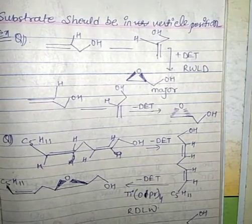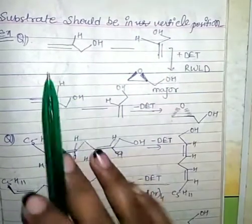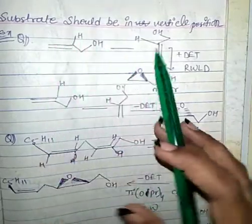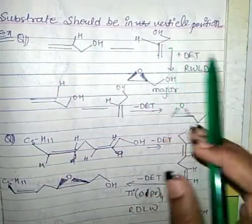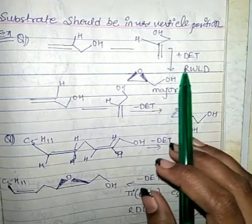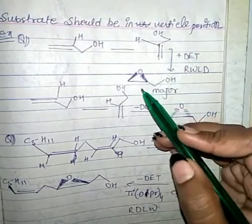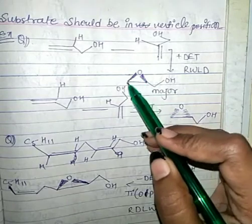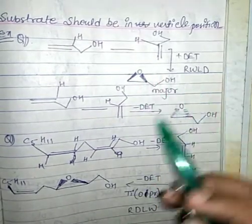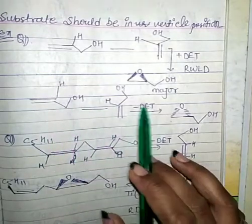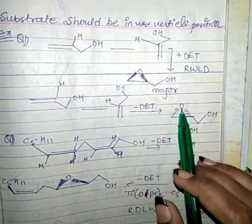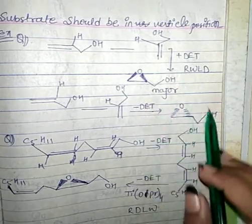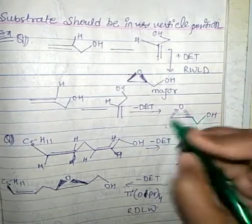Substrates are always taken in a vertical position. In the presence of (+)-DET, the alcohol is converted to an epoxide in the wedge form — this is our major product. In another example, if DET is in the minus (−) condition, we get the dashed alcohol converted to a dashed epoxide, giving this type of major product.